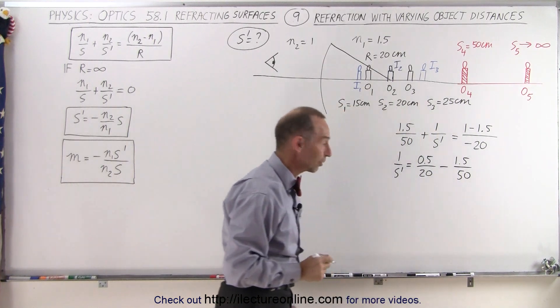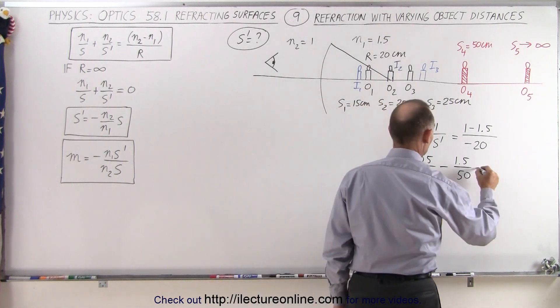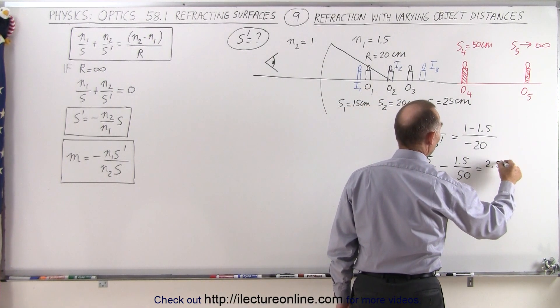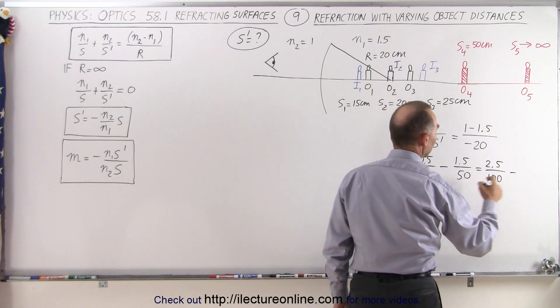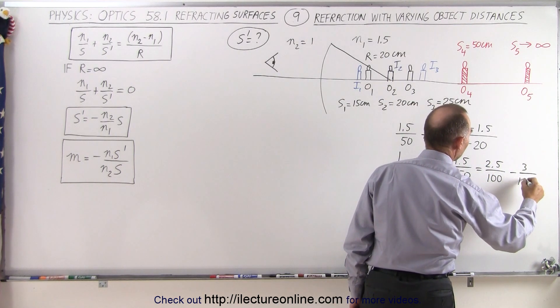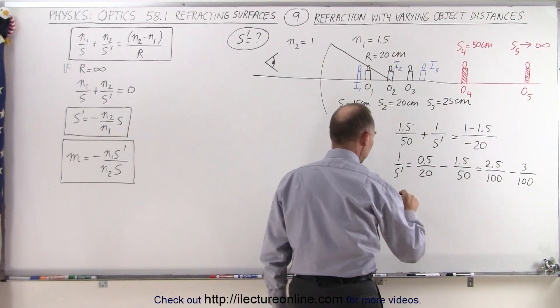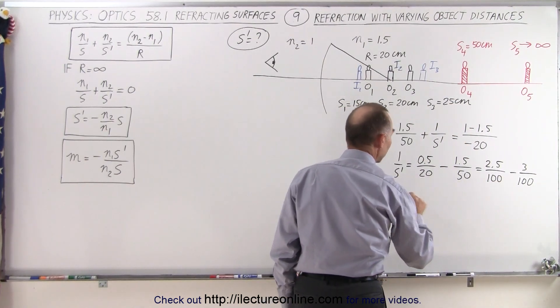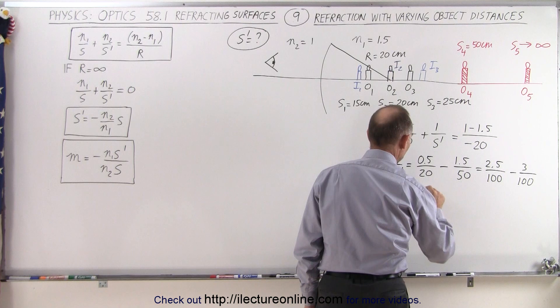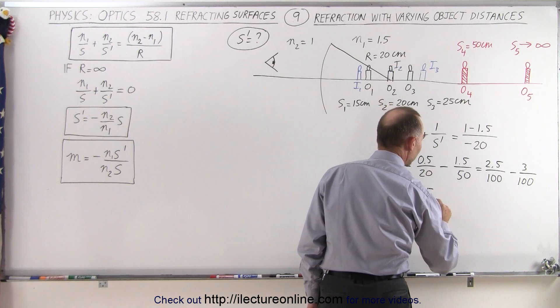Now the common denominator here looks like it's 100, so this becomes equal to 2.5 divided by 100 minus—that would be 3 divided by 100. So 1 over s prime is equal to minus 0.5 divided by 100.